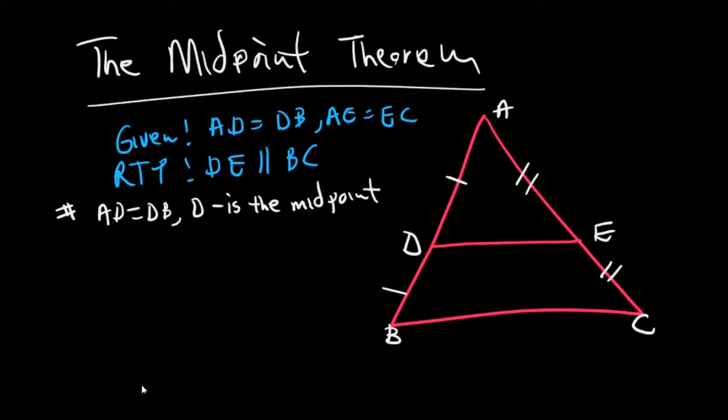Right, and since AE equals EC, therefore E is the midpoint. So you can state midpoint of what? Midpoint of AB here. Midpoint of what here? Midpoint of AC. Right, fine. So now you've proven that there are midpoints, then the second point you can say